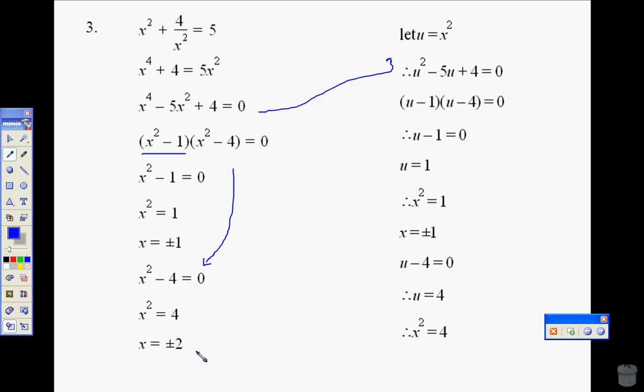If I do it by substitution, at this point I would let u be equal to x squared, which gives me a nice quadratic. If that helps you, do it that way, and that's not a problem. Either way is fine. It will get the same answers. So you get the u minus 1, u minus 4, instead of just the x squared.